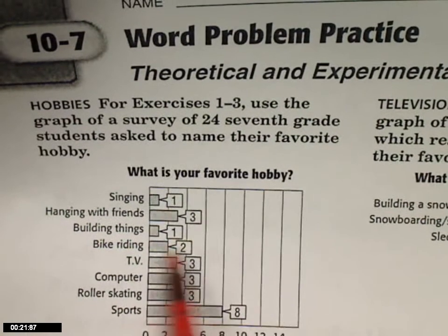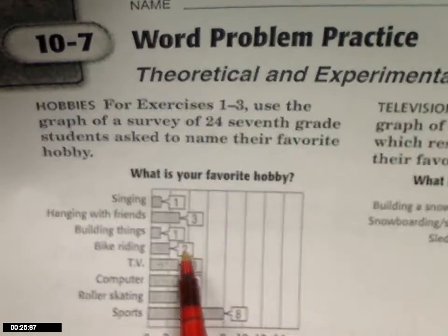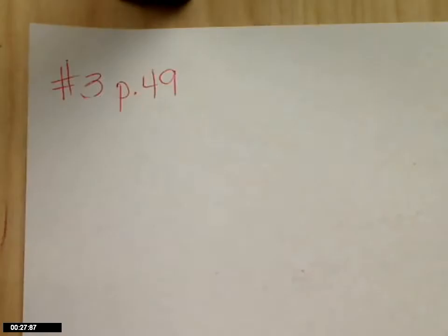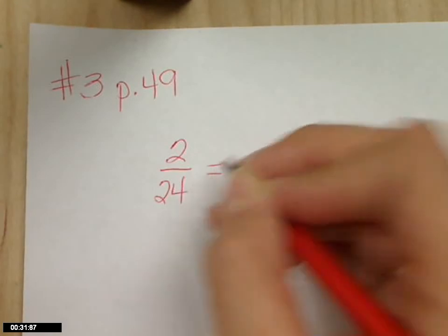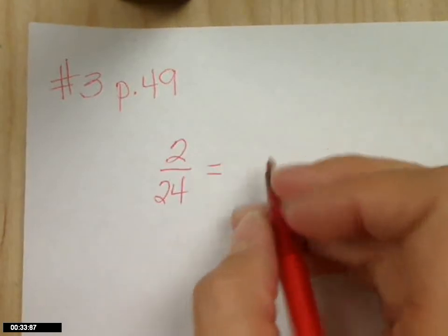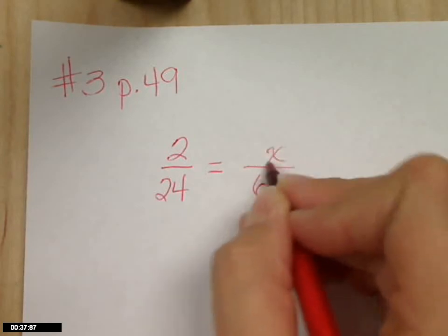So over here, bike riding is two out of how many in my survey? Two out of twenty-four, so that's one of my ratios. And then they're asking us how many if it was out of sixty. So this is my unknown.